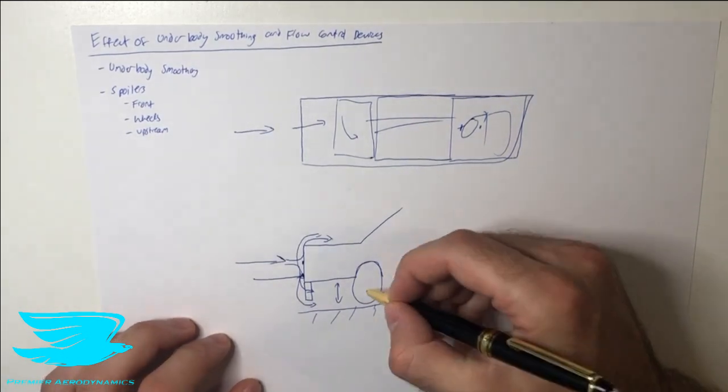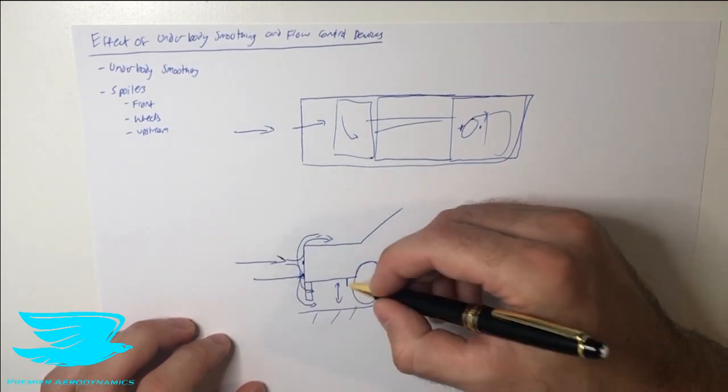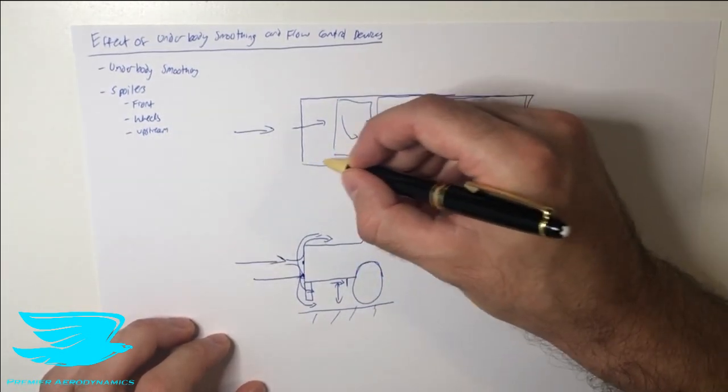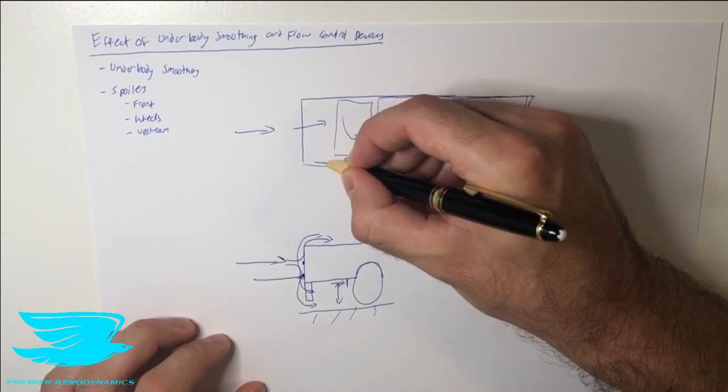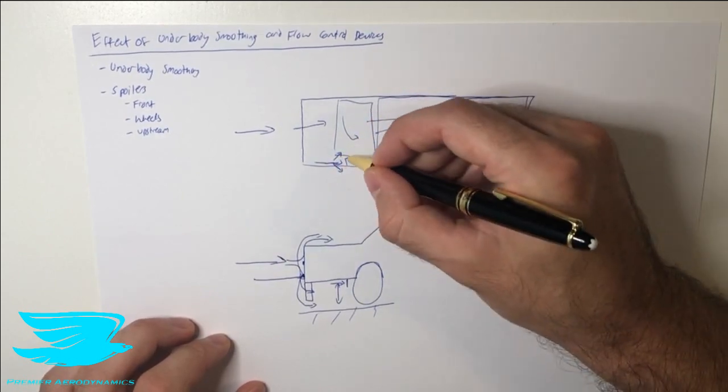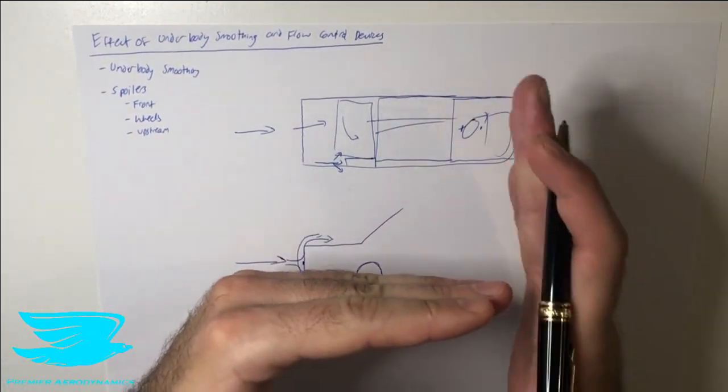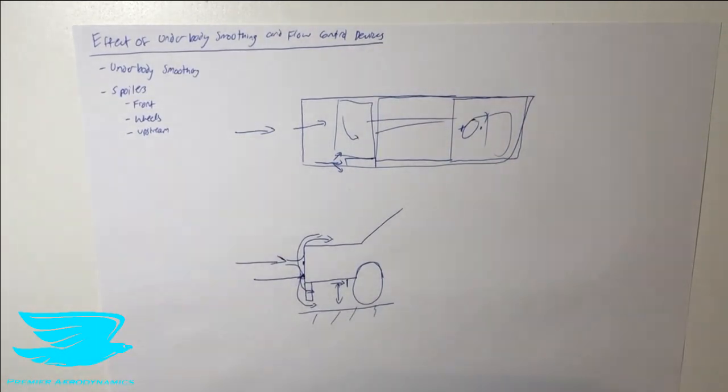Another spoiler we can use is something called wheel spoilers. In front of the wheel, we have these little flaps that come down and they redirect the flow. Instead of the flow coming directly on and hitting the wheel, it might get redirected a little bit out or inside, and then that can skip around the wheel. We don't have this flow hitting the front of the wheel, this perpendicular surface, and it reduces the drag that way.